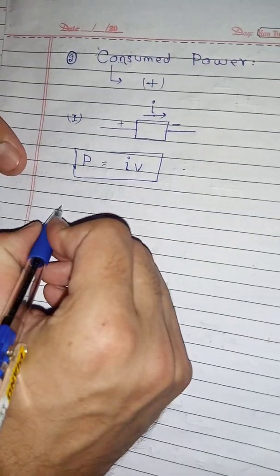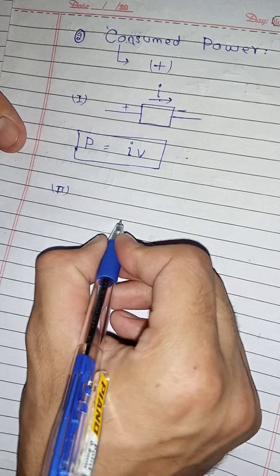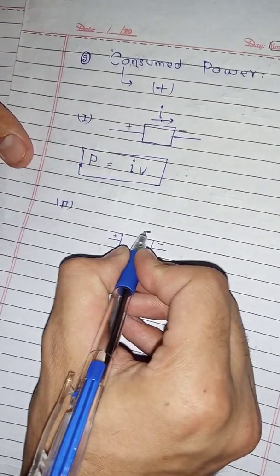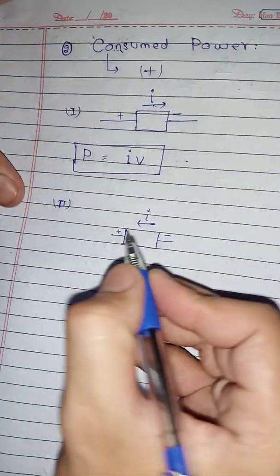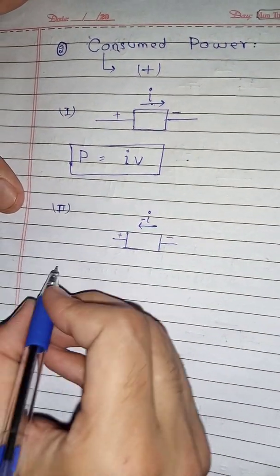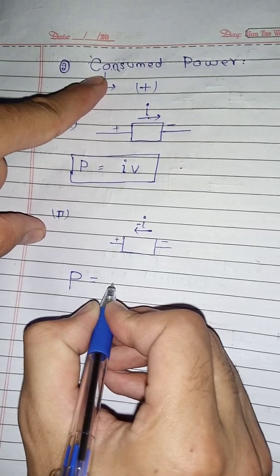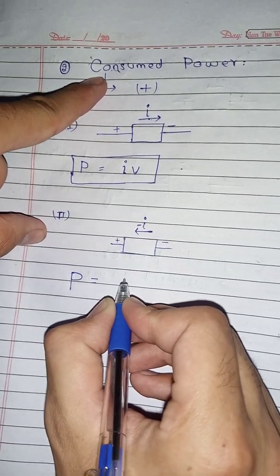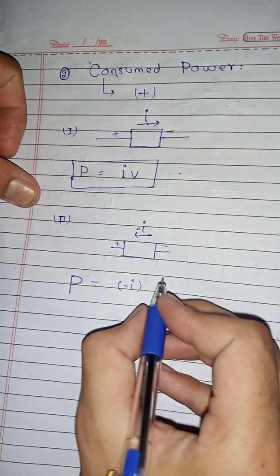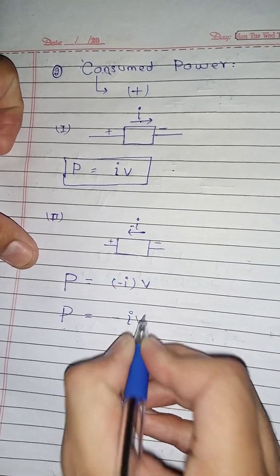In contrary, when we look at the case that does not adhere to the passive sign convention, current flows from negative to positive terminal, making the current negative. So for consumed power, the power formula gives a positive sign for consumed power, but the current is negative. Therefore, power equals positive times negative times V, so the power over here will be negative.